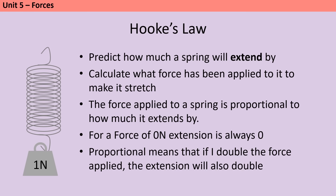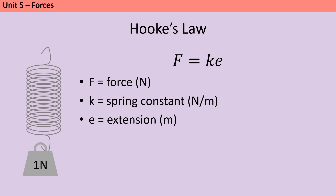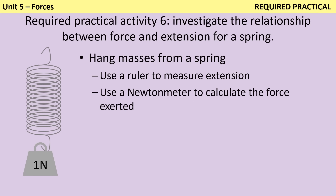We can use Hooke's law to make predictions about how much a spring will extend when a force is applied, because these are directly proportional. If I double the force applied, the extension will also double. The force applied equals the spring constant multiplied by the extension. Hooke's law holds until the limit of proportionality is exceeded. In the required practical you would have had a spring suspended on a clamp stand, hung masses off it, used a ruler to measure extension, and a newton meter to calculate the force exerted by the masses.